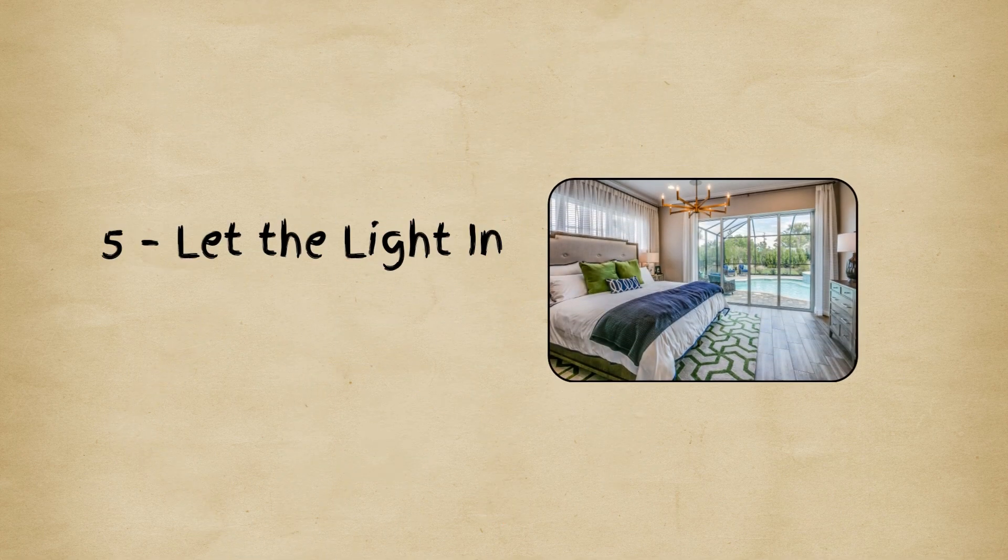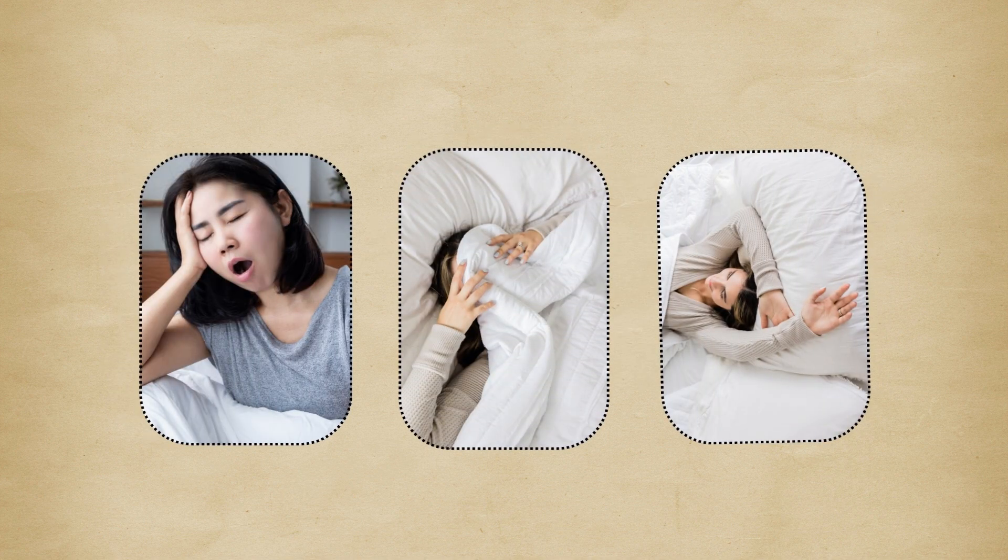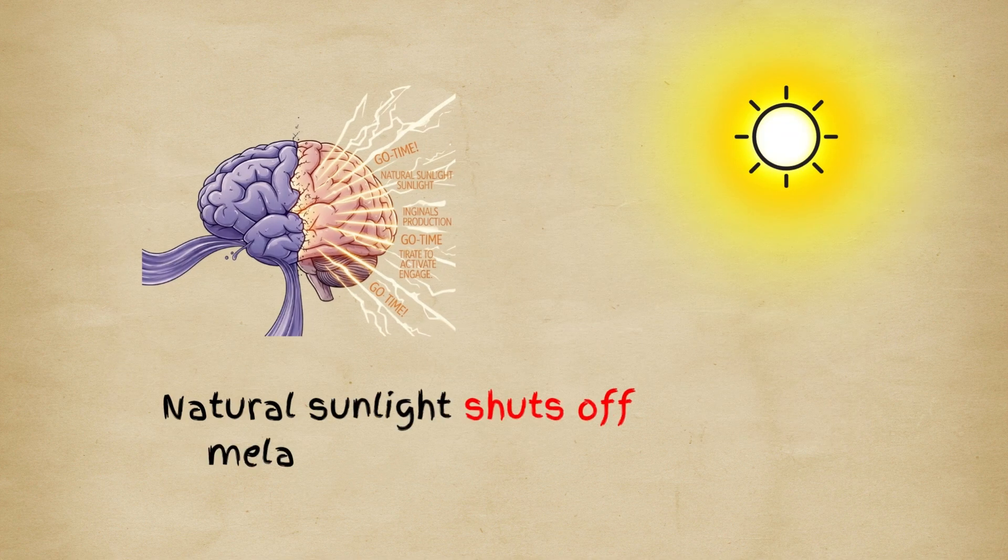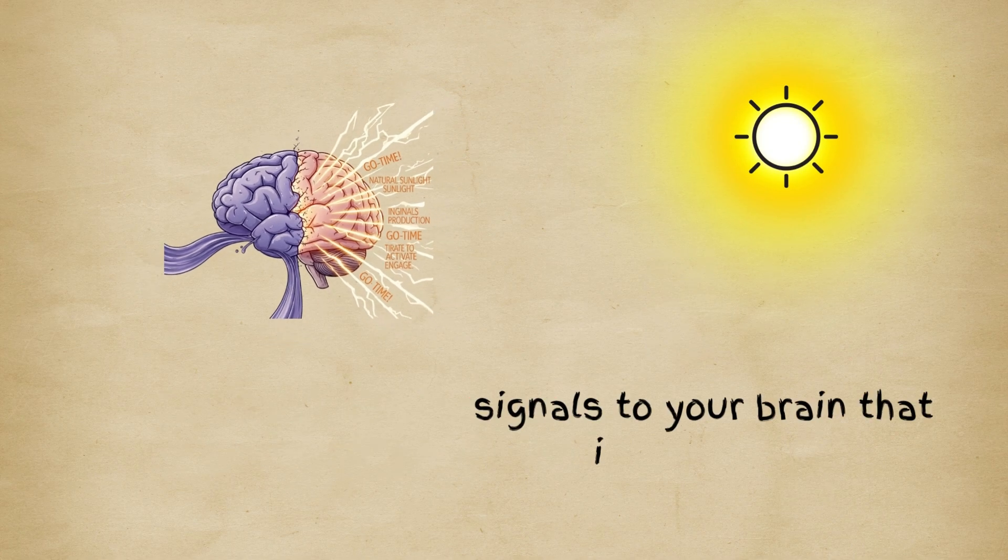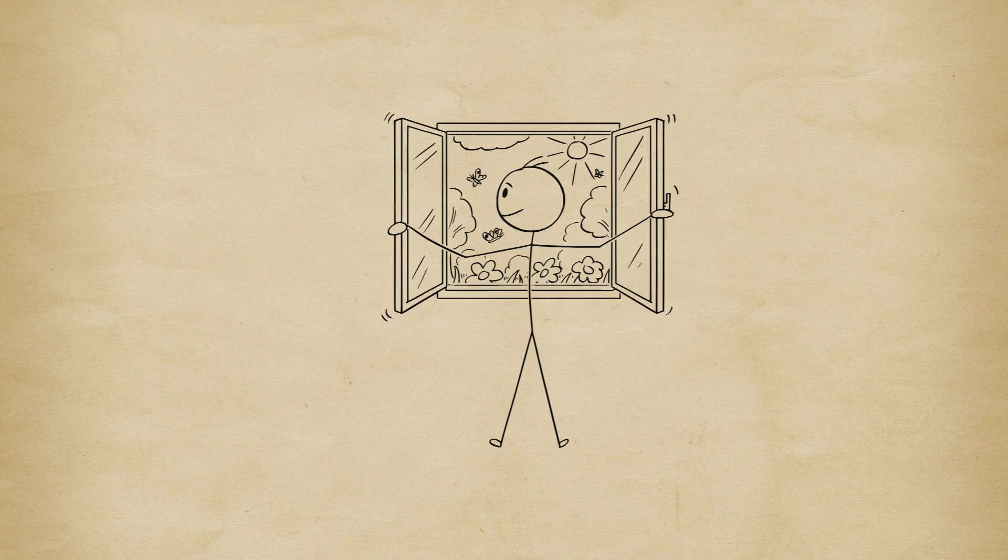5. Let the light in. When you wake up, don't hide under the covers. Seek out light. Natural sunlight shuts off melatonin production and signals to your brain that it's go time. Open your curtains or step outside for 5-10 minutes.